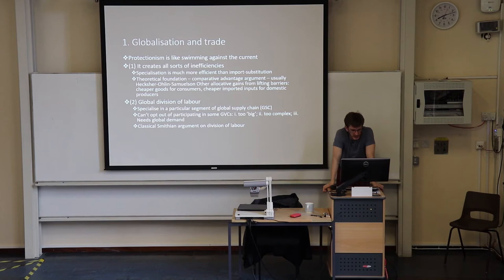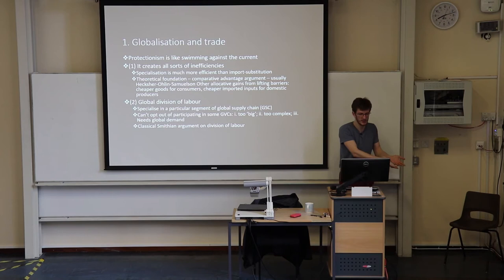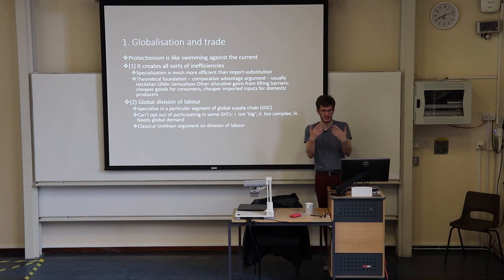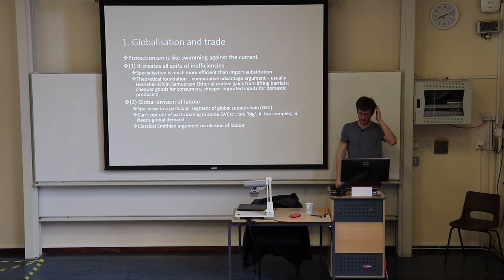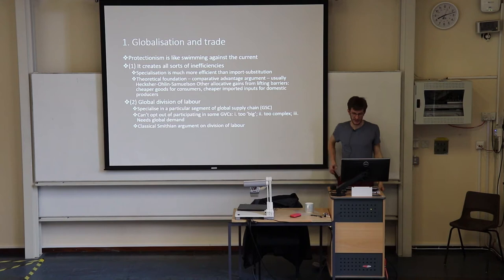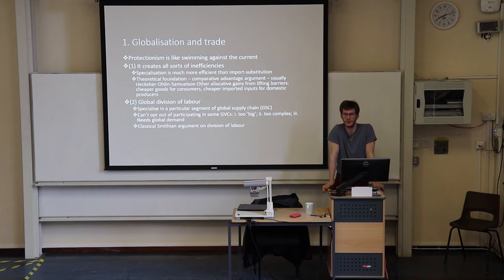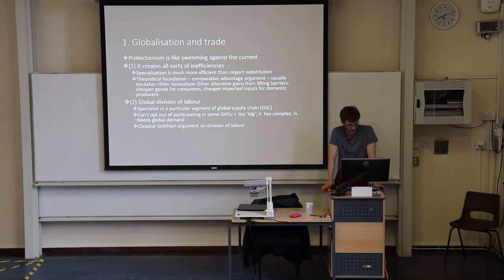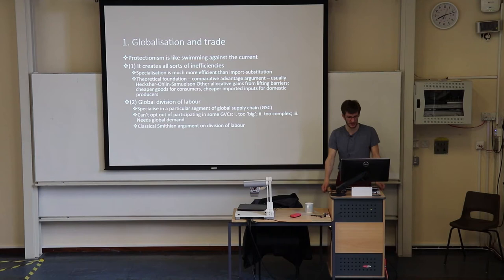The theory used for this argument — the Heckscher-Ohlin-Samuelson theory of comparative advantage — says specialization is based on relative factor endowments. If you have many workers but not many machines, you use those workers in labor-intensive sectors; if you have many machines but not many workers, you produce cars or other manufactured goods. Get rid of all trade barriers and, under the assumptions of the theory, there will be wage equalization, meaning everyone will be earning pretty much the same.